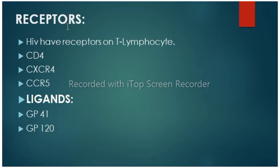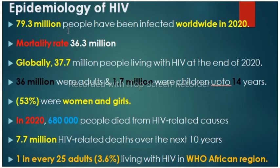HIV has receptors on T lymphocytes: CD4, CXCR4, and CCR5 receptors, and ligands GP41 and GP120, which are made from glycoprotein.